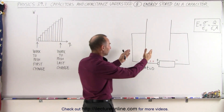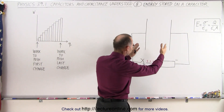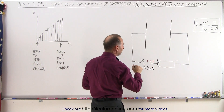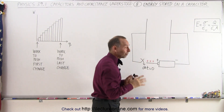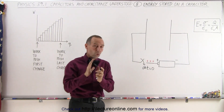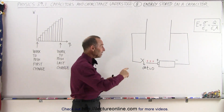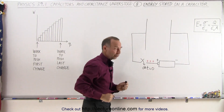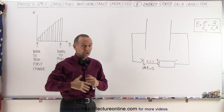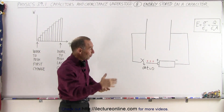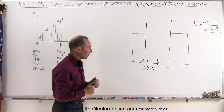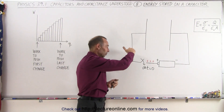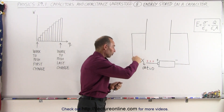We have a capacitor with certain dimensions connected to a battery. And we have a switch here, temporarily holding off any charge built up onto the capacitor until we close the switch. As long as the switch is open, no charges can flow onto the capacitor. So at time equals zero, we're going to close the switch.